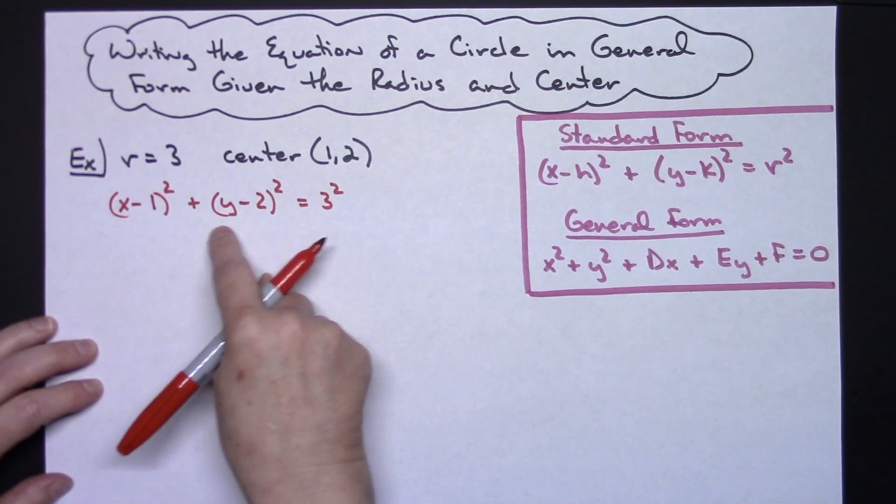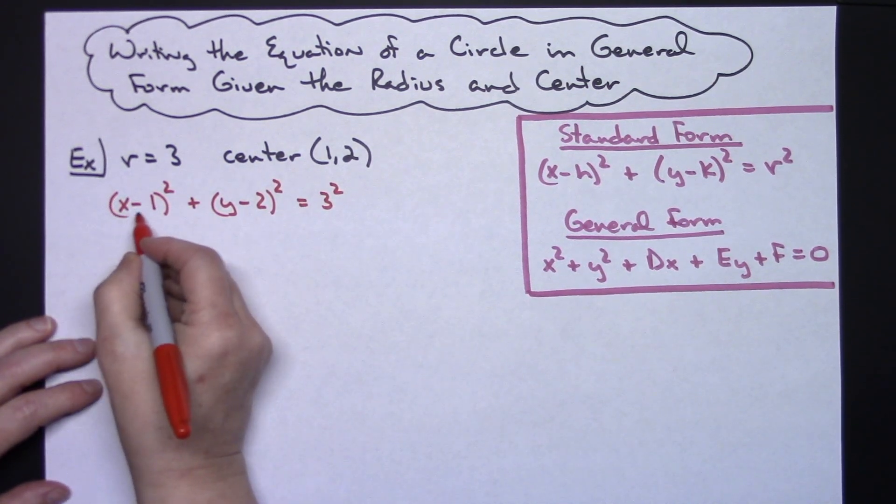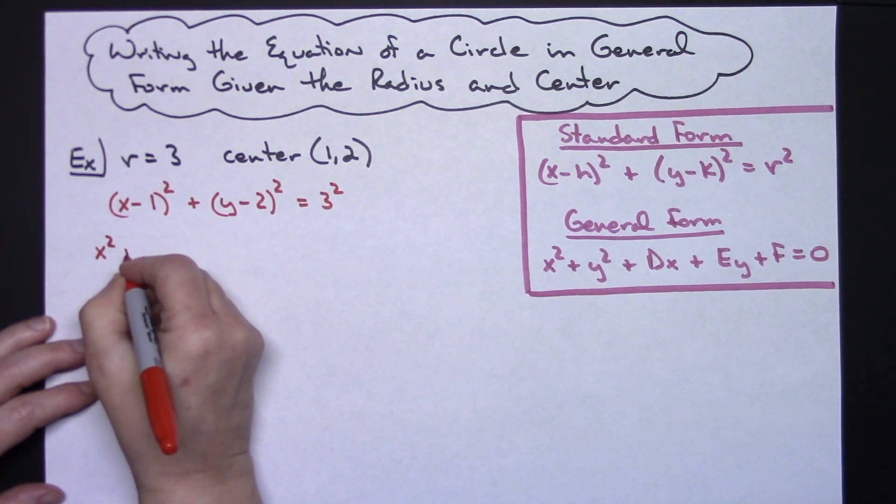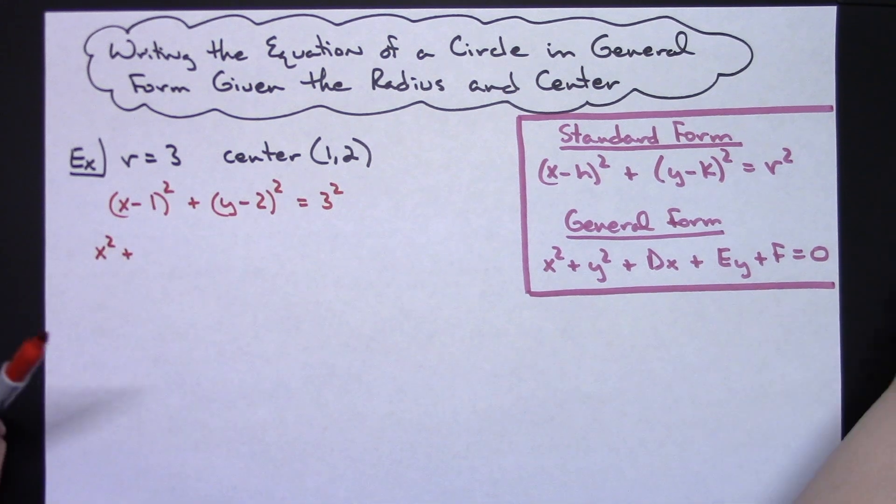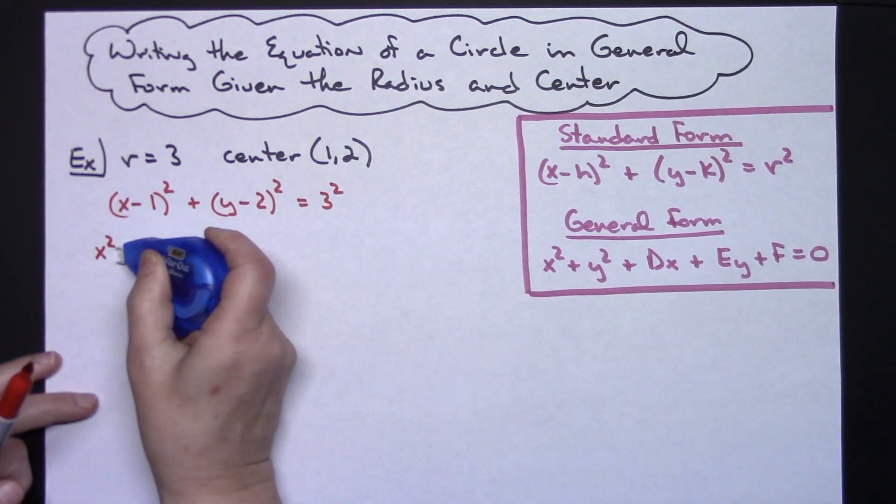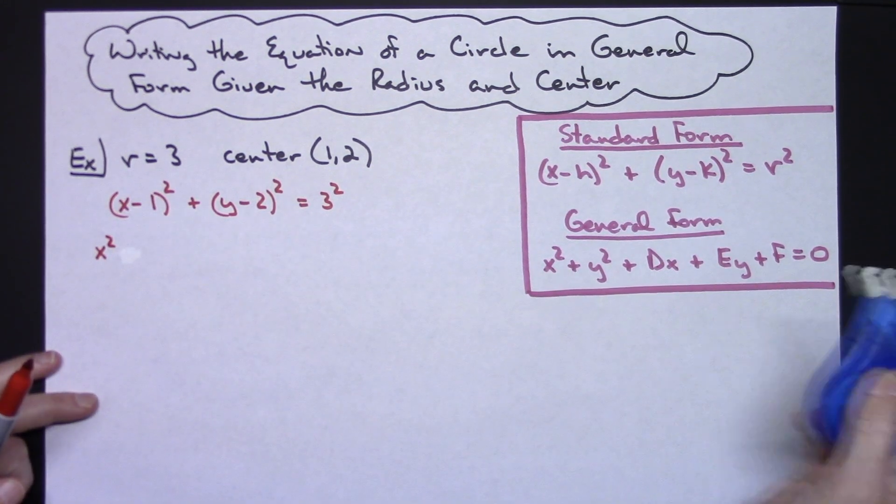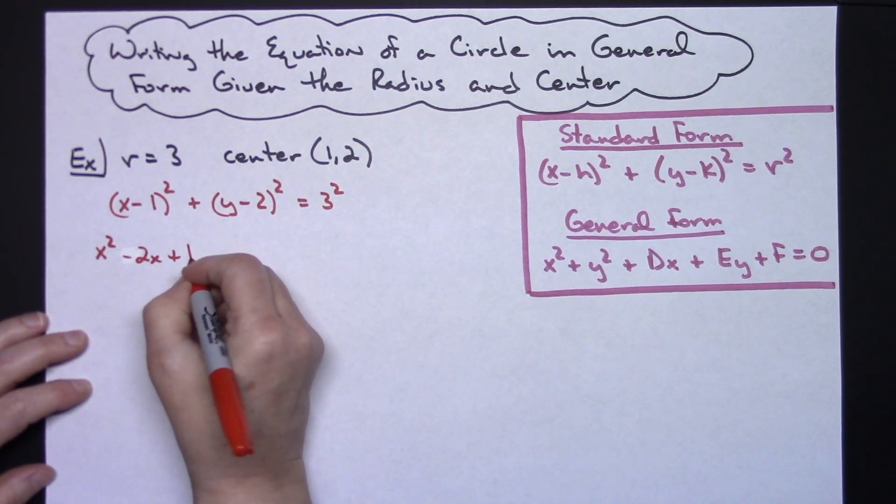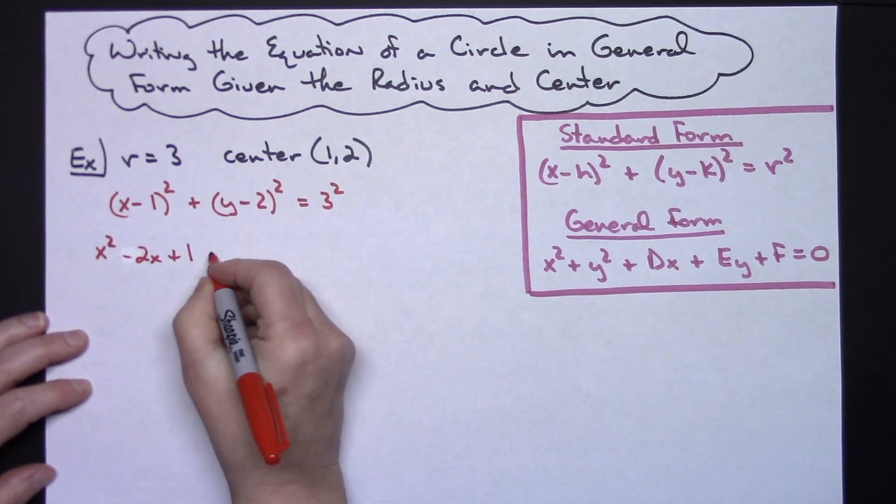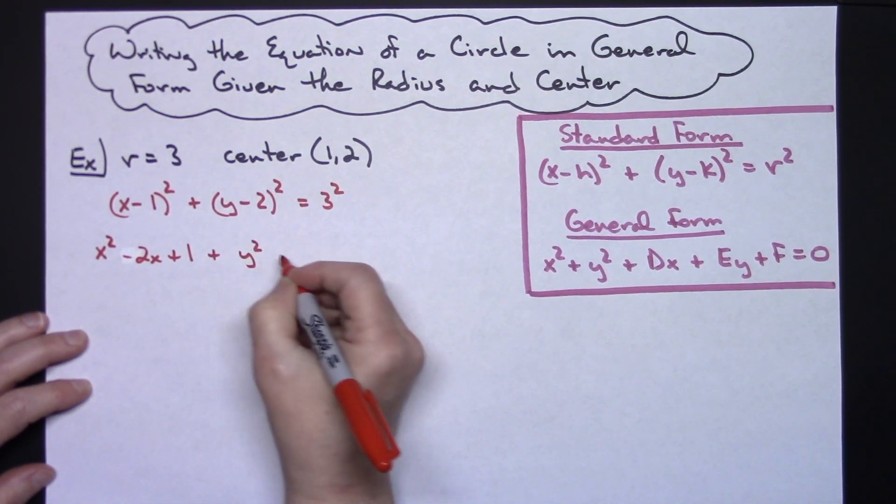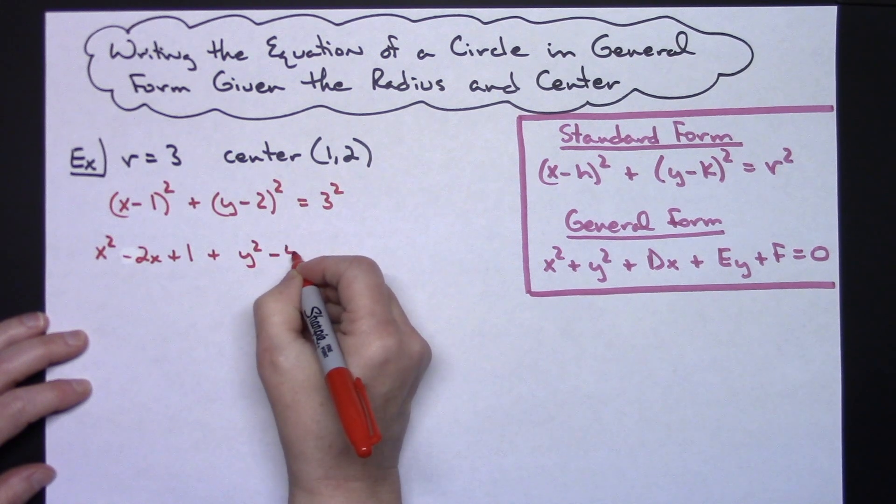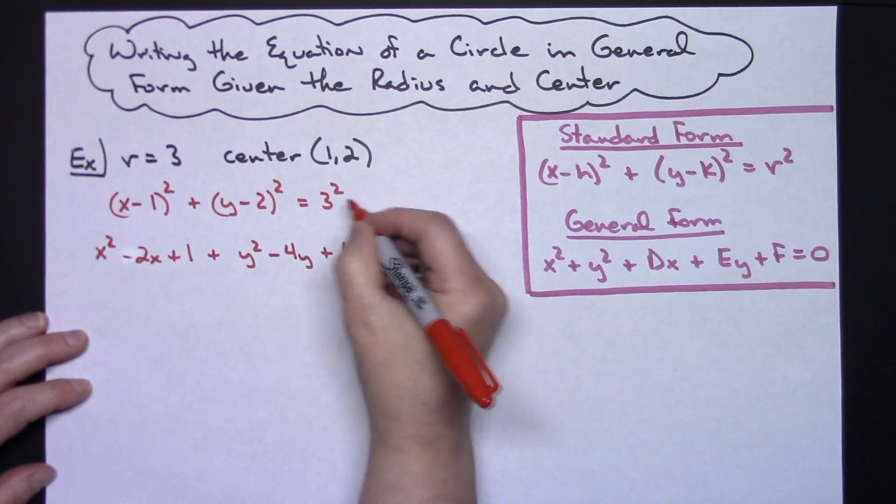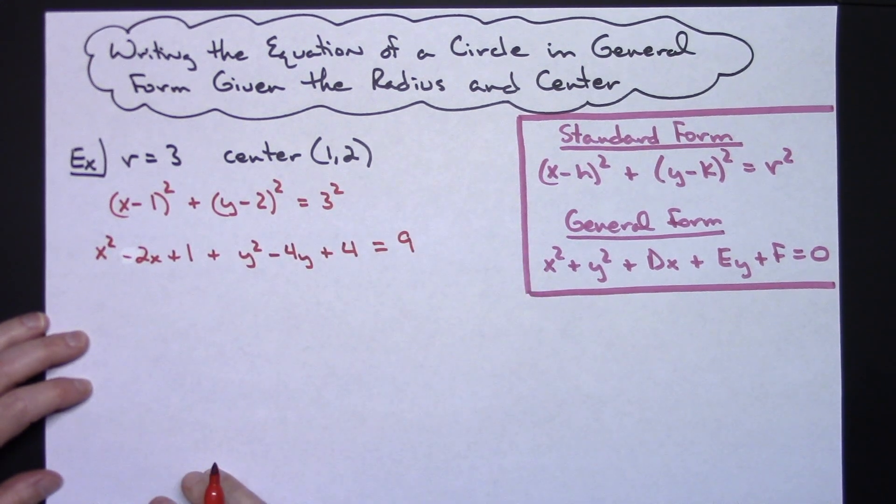I'm going to need to foil both of those out. So foiling this first term out here I'm going to have an x squared minus 2x and then a plus 1. Foiling this out here I'll have a y squared and then a minus 4y and a plus 4. And then squaring the 3 on the other side I'm going to have a 9.